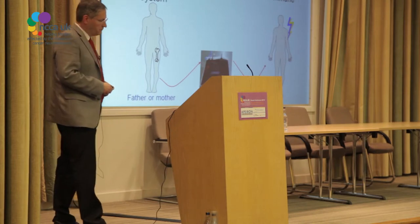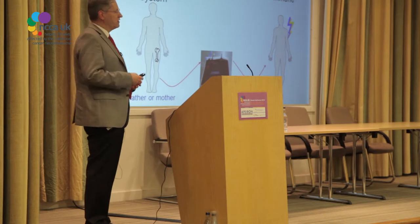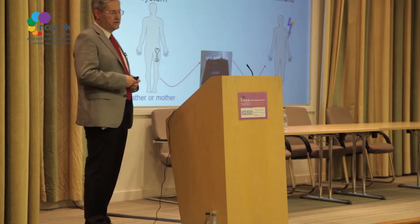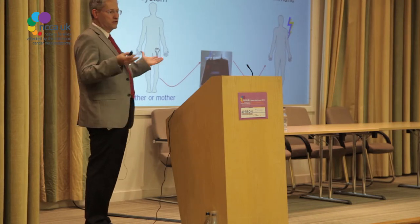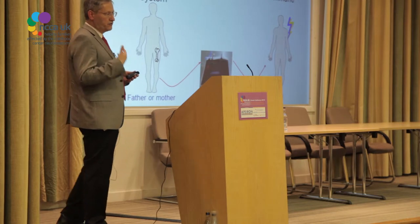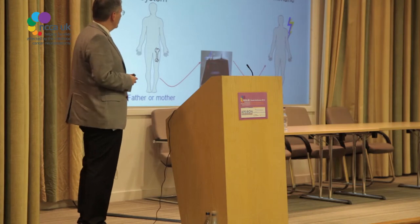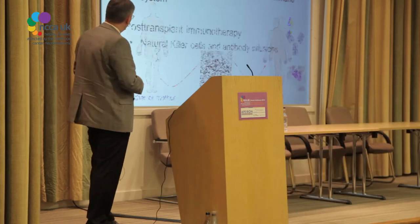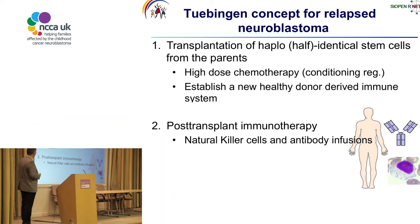The Tübingen concept for relapsed neuroblastoma patients consists of, first, a transplantation of haplo — that means half-identical stem cells from the patient's father or mother — which includes a high-dose chemotherapy, the so-called conditioning regimen, which has to wipe out the complete bone marrow of the patient and which establishes afterwards a new healthy donor-derived immune system from the father or from the mother. And second, we want to add a post-transplant immunotherapy on the basis of donor-derived natural killer cells and antibody infusions.